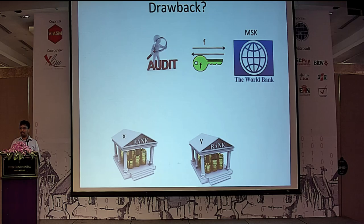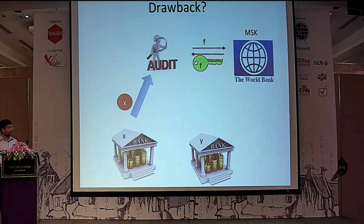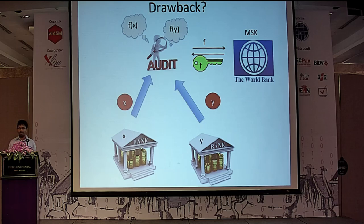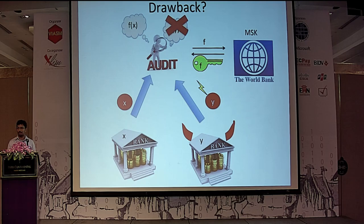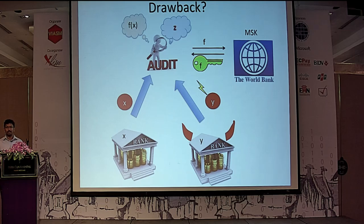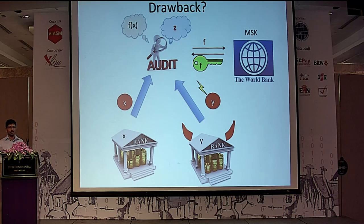Now let us see if there are any drawbacks with this motivating example. Say there are two banks, one with input x and the other with input y, and they both send their encrypted data to the auditor, who computes f(x) and f(y). But suppose the second bank is malicious and does not want to give actual data to the auditor. Instead of encrypting y, it sends some garbled random string, and the auditor learns some random value z instead of f(y). Functional encryption offers no guarantee here — it only handles a malicious decryptor, not a malicious encryptor.